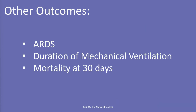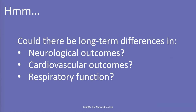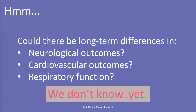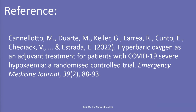Other outcomes — such as ARDS, duration of mechanical ventilation, and mortality at 30 days — were not different between the two groups. However, we have to wonder what the long-term differences might be in neurological outcomes, cardiovascular outcomes, and respiratory function when we increase the amount of oxygen available to the tissues. We don't know yet if these things were improved by hyperbaric oxygen. Hopefully future studies will tell us more about these long-term outcomes. We do know in the short term it increases oxygenation and shortens the period of hypoxemia.